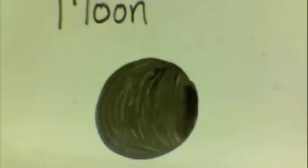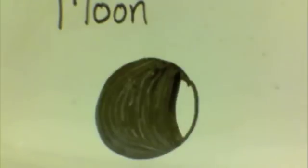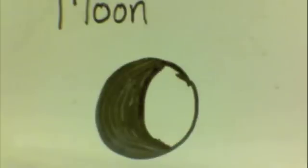Waxing. When the moon orbits the earth and it goes from a new moon to a full moon, it's called the waxing moon. Waxing means slowly getting bigger.